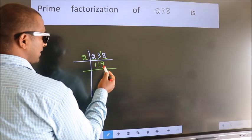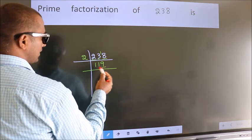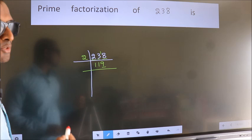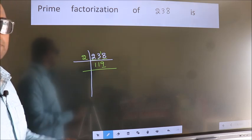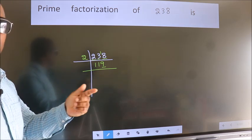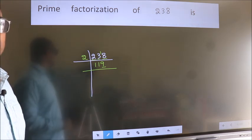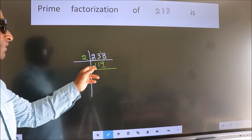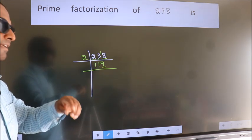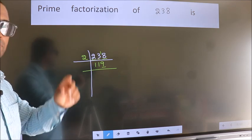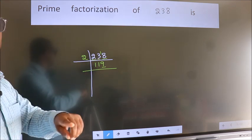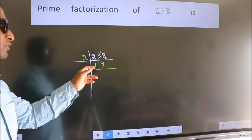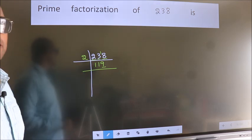Now last digit 9 not even, so this number is not divisible by 2. Next prime number 3. To check divisibility by 3, we should add the digits. 1 plus 1 plus 9, we get 11. Is 11 divisible by 3? No. So this number is also not divisible by 3.